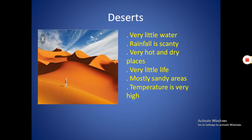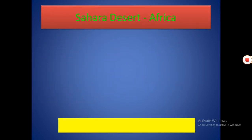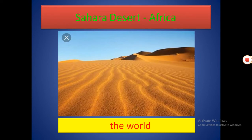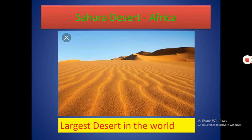They are mostly sandy areas. The Sahara Desert in Africa is the largest desert in the world. The Thar Desert, or the Great Indian Desert, is situated in Rajasthan.